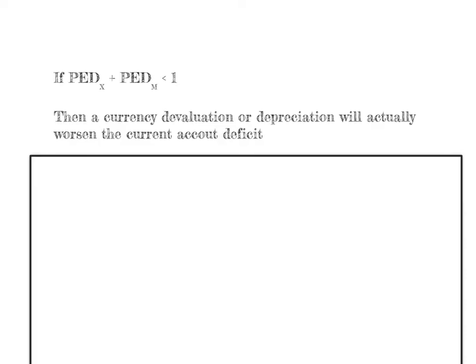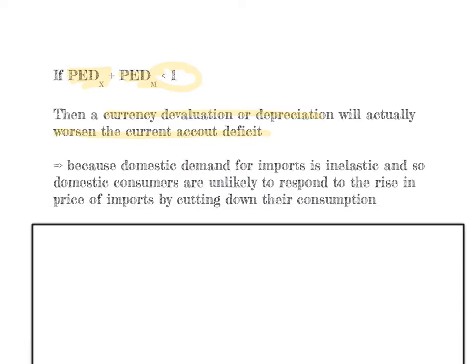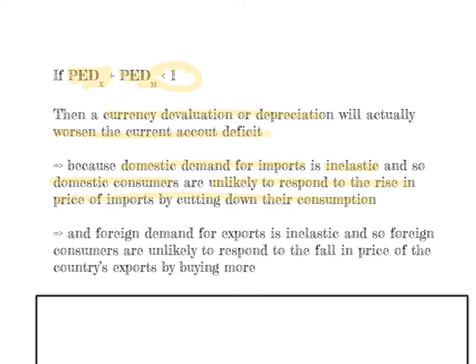According to the Marshall-Lerner condition, if the combined price elasticity of demand of exports plus imports is less than one, then a currency devaluation or depreciation will actually worsen the current account deficit. This is because domestic demand for imports is inelastic, so domestic consumers are unlikely to cut their consumption, and foreign demand for exports is also inelastic, so foreign consumers are unlikely to buy more.